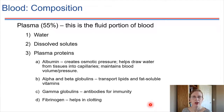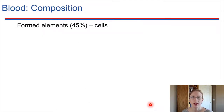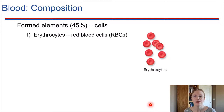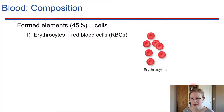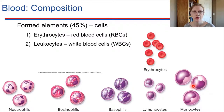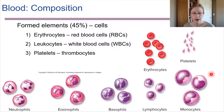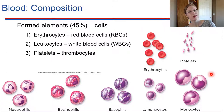Now let's move on to formed elements. Blood is 55% plasma and 45% formed elements, and there are three different types. First, erythrocytes — the red blood cells. Second, leukocytes — the white blood cells, which come in many different varieties. And finally, thrombocytes — the platelets, which are very important in clotting. Those are our three different types of formed elements in the blood.